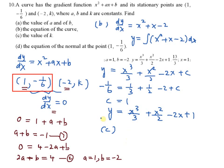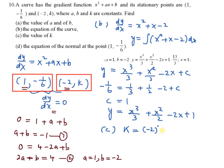For part c, the value of k: the stationary point is (-2, k), so you need to find k. It's simple — you already have the equation. Just substitute y as k and x as negative 2 into the equation, and press your calculator. You get the value for k, which is 13 over 3.